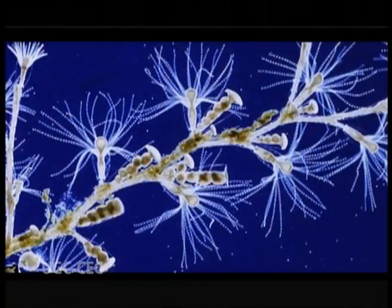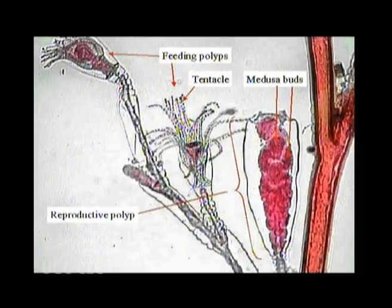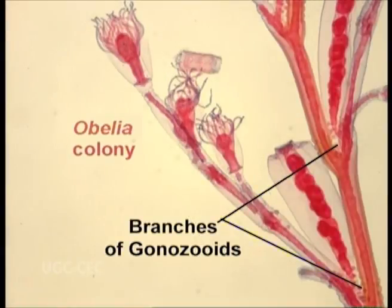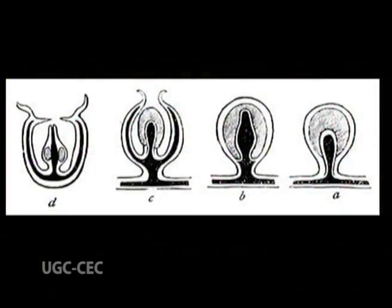Gonozooids are polyps for reproduction that produce sexual medusae or gonophores. They may appear like gastrozoids and may be branched, but usually take the form of a branched stalk called gonodendron bearing bunches of gonophores with gonopalpons.